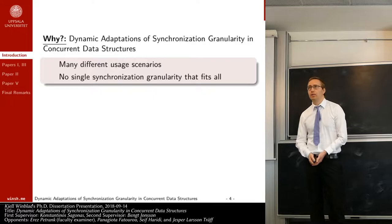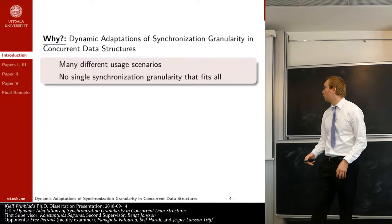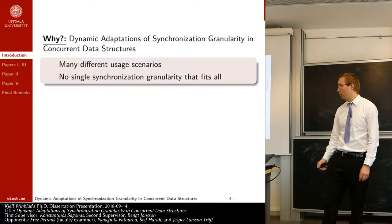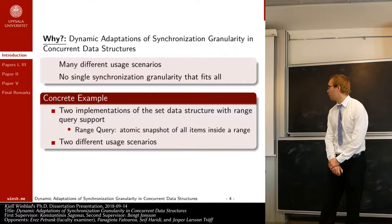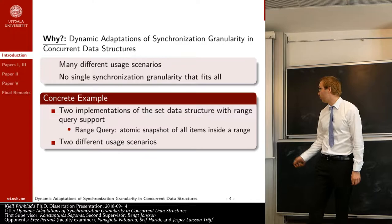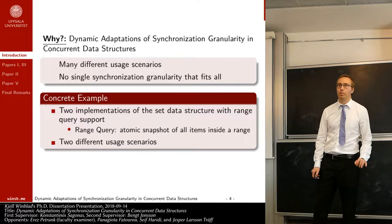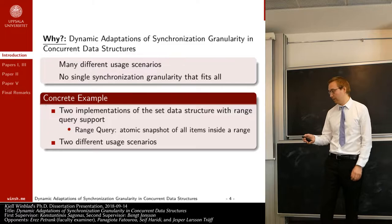Why would you like to do this kind of dynamic adaptation of synchronization granularity? There are many different usage scenarios for concurrent data structures, and there is no single synchronization granularity that fits all of these scenarios. I will illustrate this with a concrete example: two different implementations of a data structure representing a set of items with support for a range query operation — an operation that takes an atomic snapshot of all items in a given range, from starting key X to end key Y.